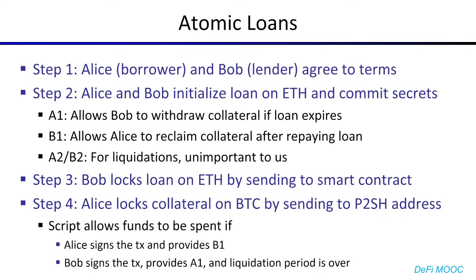After the loan is initialized, Bob will lock their principal on Ethereum by sending it to the smart contract. Meanwhile, Alice will lock her collateral on Bitcoin by sending it to a P2SH address. For those who aren't familiar, P2SH stands for pay-to-script hash — this is a type of address whose address itself is the hash of a script, a Bitcoin script.